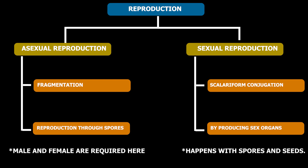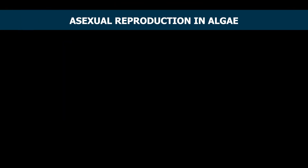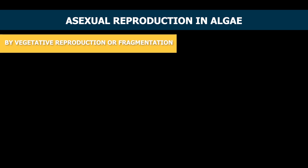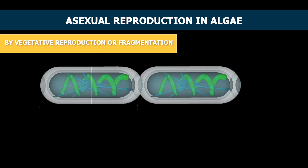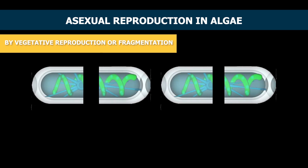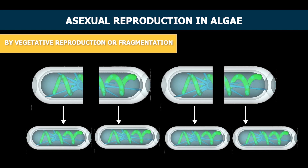Algae reproduce both sexually and asexually. Asexual reproduction takes place in algae by vegetative reproduction or fragmentation. In this reproduction, algae break down into fragments and the fragments grow into bigger organisms. Spirogyra reproduces in such a fashion.